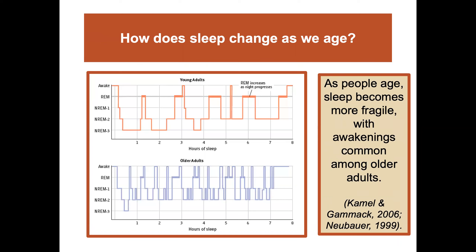How does our sleep change as we age? As people age, sleep becomes more fragile, with awakenings commonly occurring more often in older adults. This fragility of sleep becomes more common as adults get older, as you can see from the visual here.